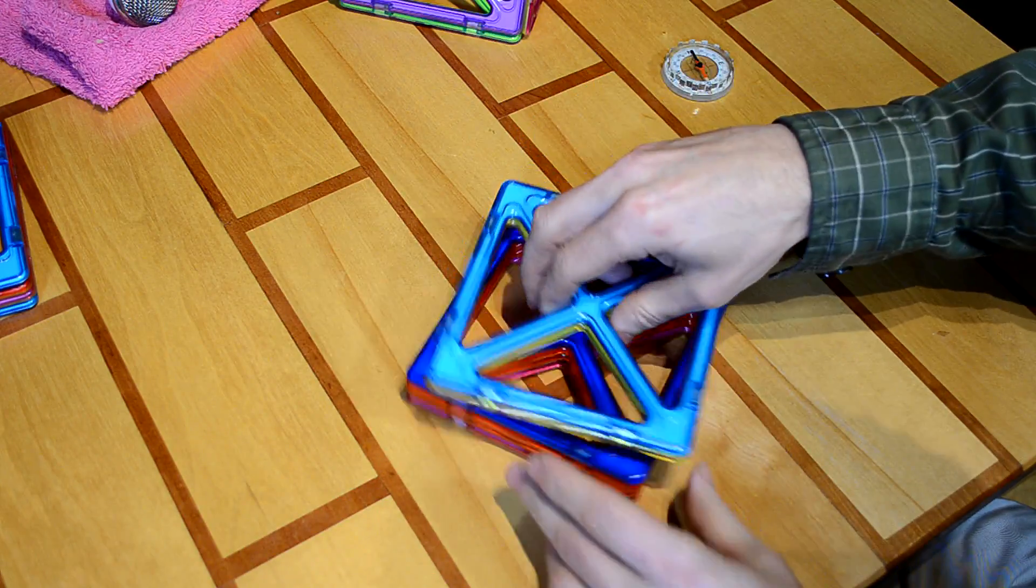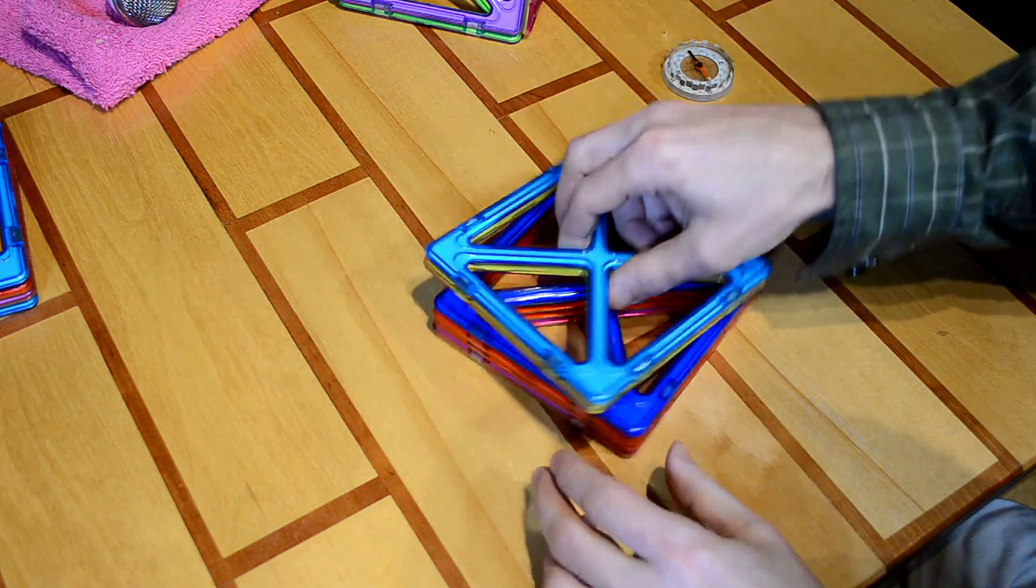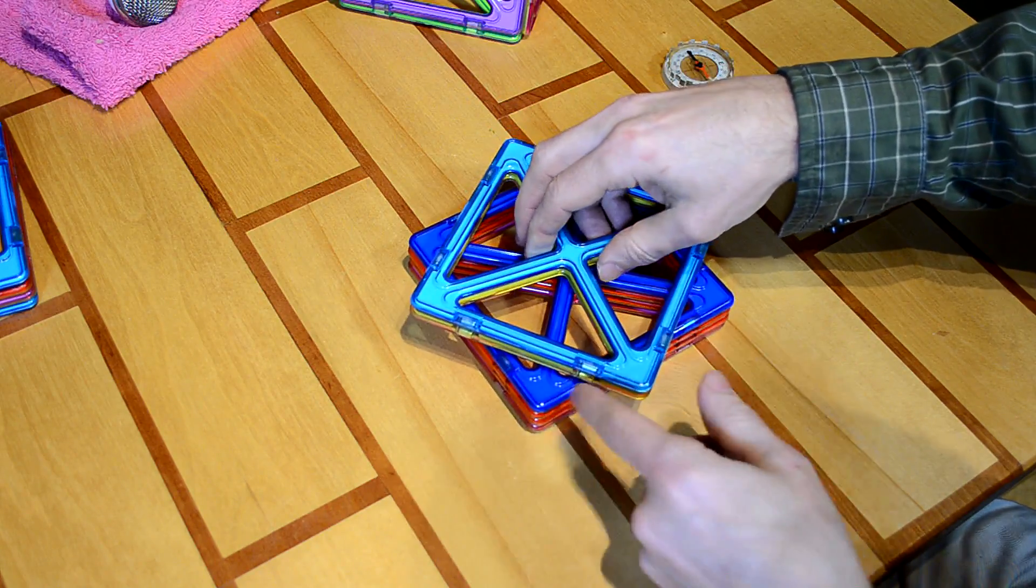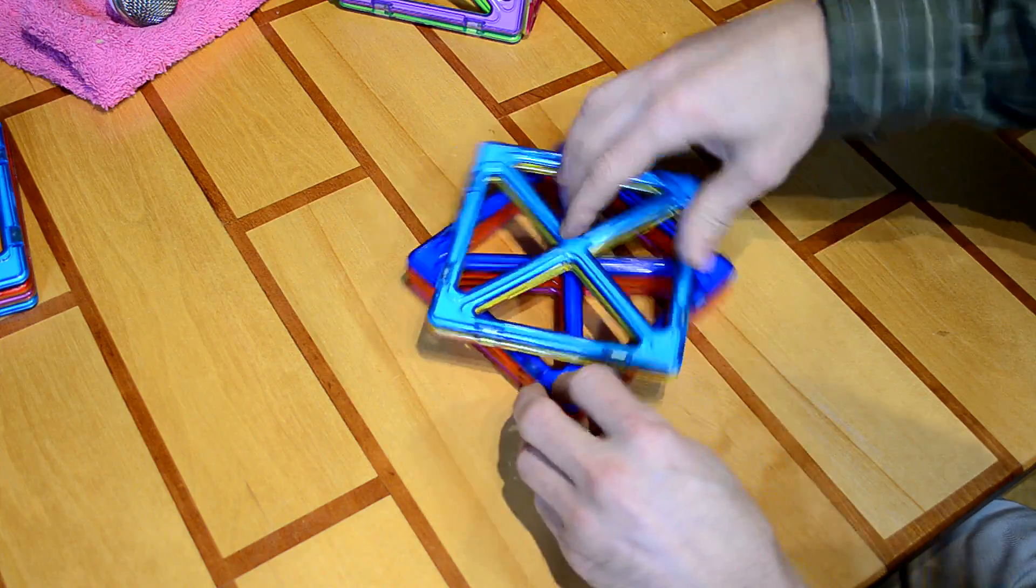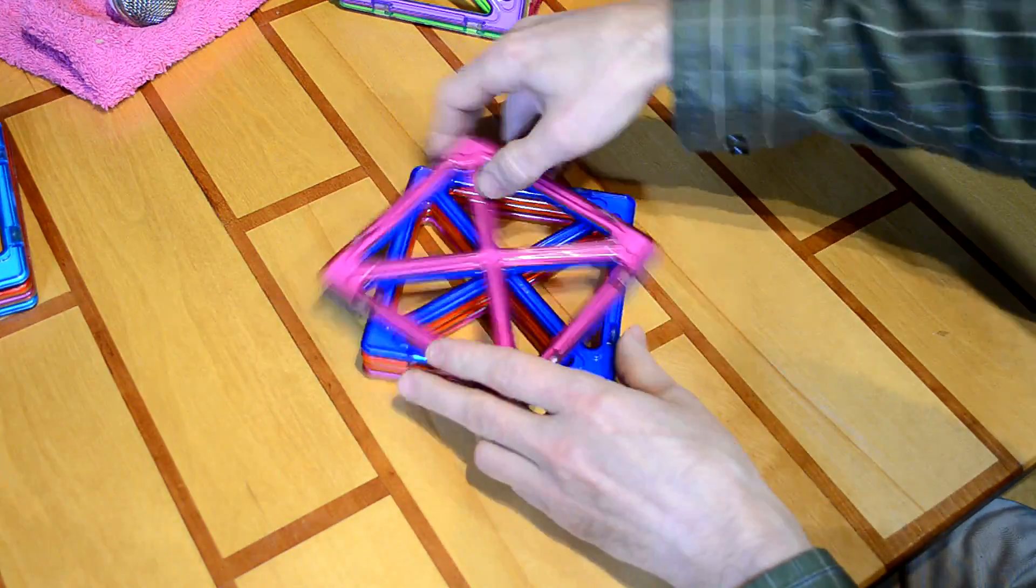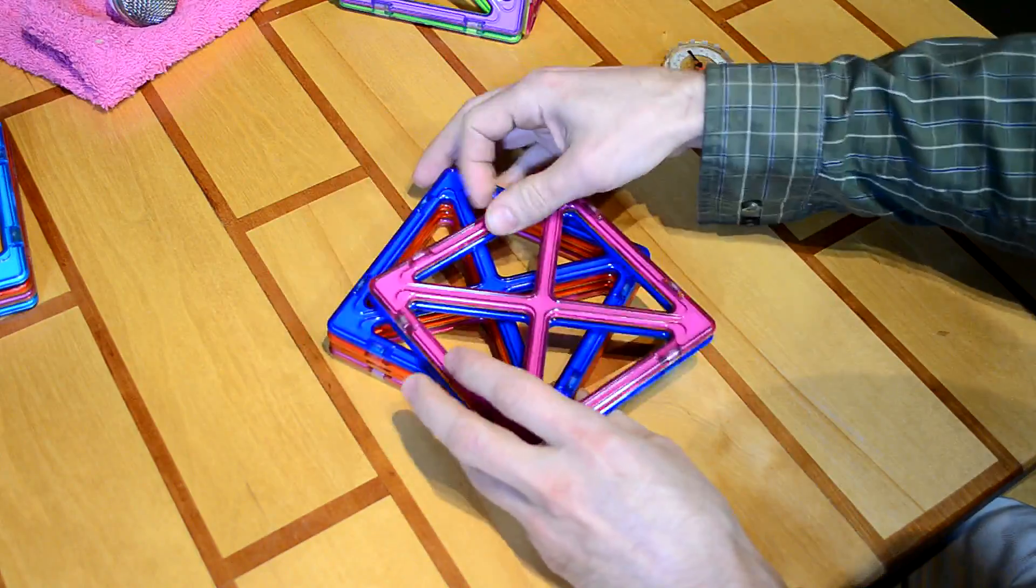Which means, these will not in any way fit together properly, no matter what I try. It'll fit kind of at an odd angle, where I've got these diagonal, adjacent sort of magnets. But, no matter what I do, these will not stick together.